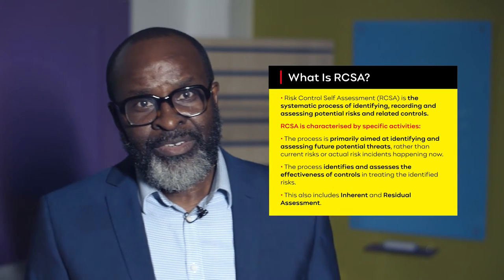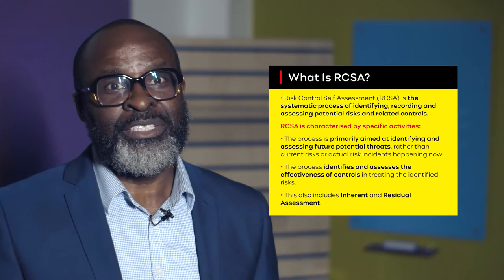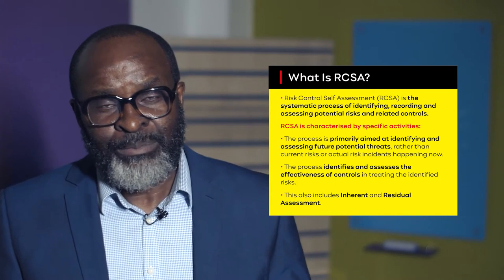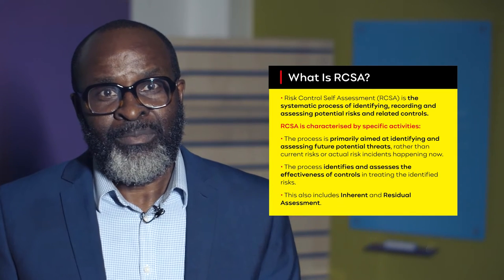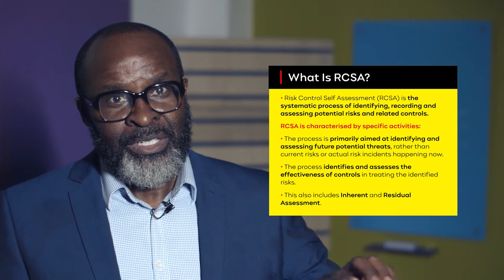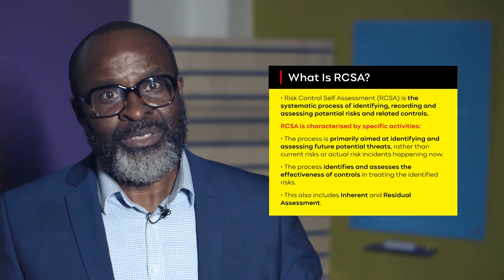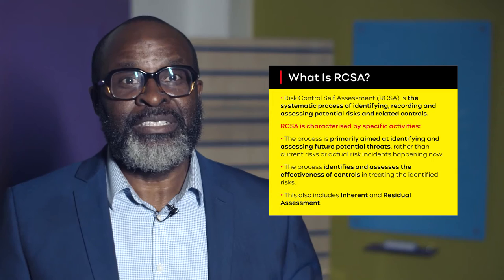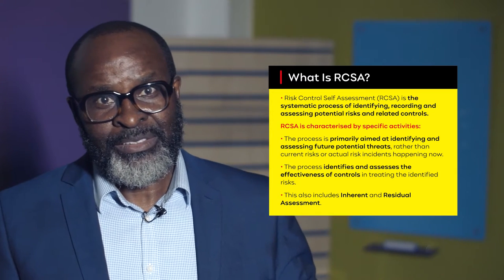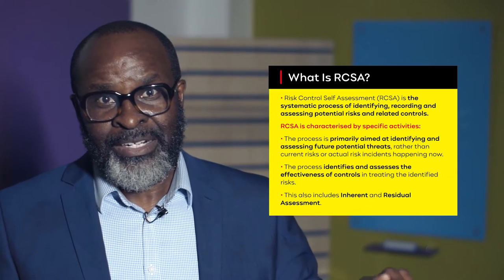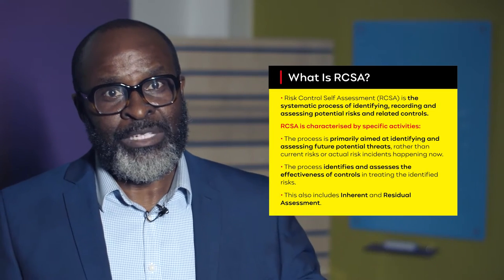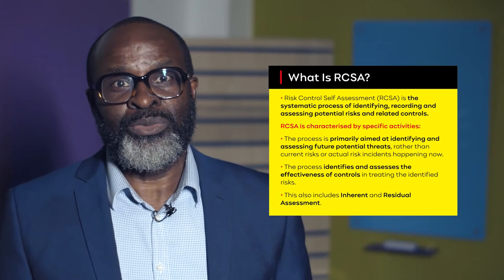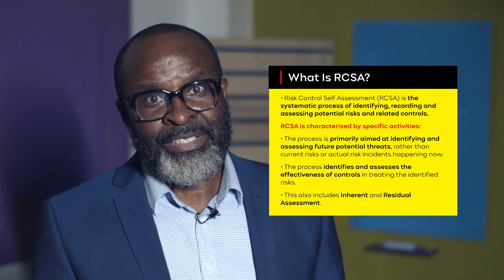I'll explain this. Inherent risk — this is what is also known as gross risk. These are the risks you've identified before applying controls to them. Your inherent or gross risk is based on an assessment of that risk or threat without any control. So if you have identified threats and there are no controls, the potential or likelihood of them happening will be higher. Then you apply controls to it.